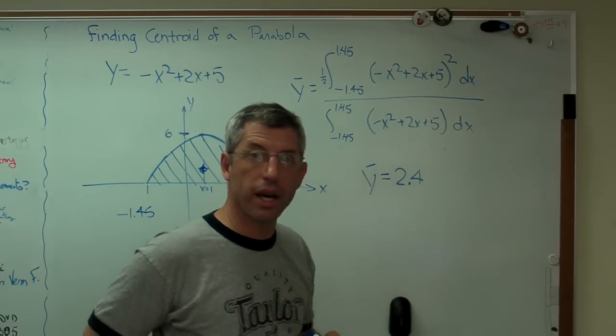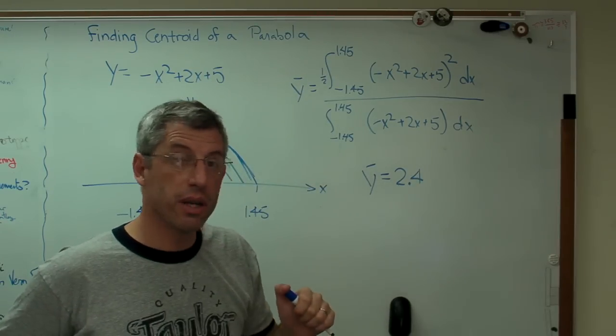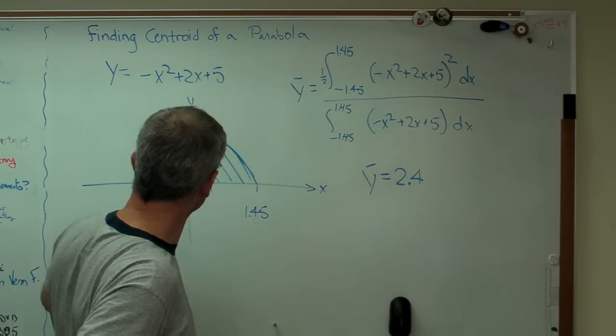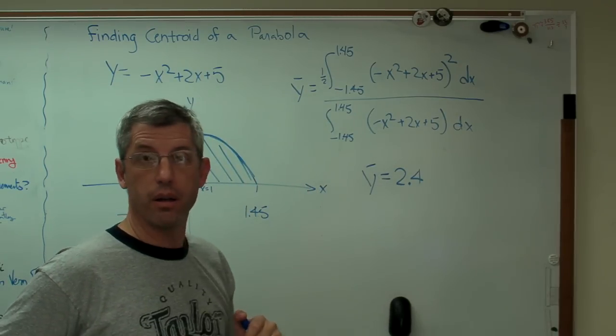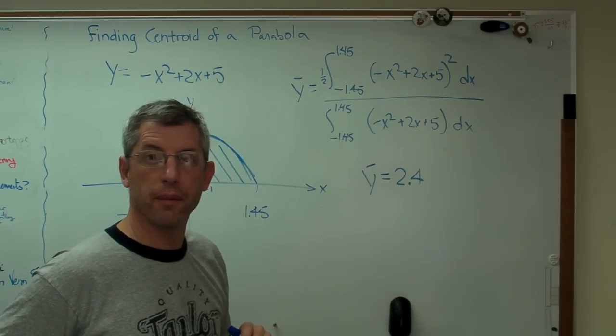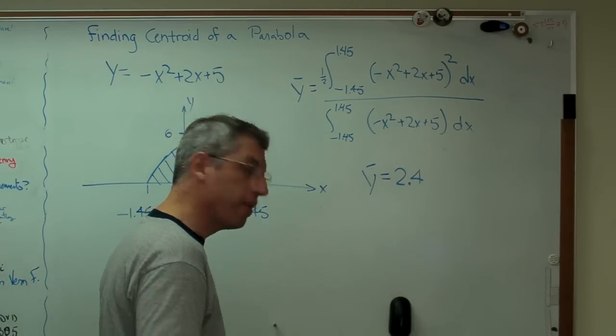I also ran this in the x-axis using the exact same process. But now my centroid distance, instead of being in y, was in x. And I got x bar equals 1. That's the right answer. So that tells me I'm using the right method here. So there you go. This is how to figure out the centroid of a parabola.